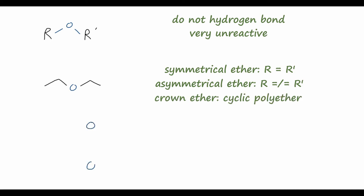Another type of ether is called a crown ether. An example has a six-oxygen cyclic molecule where each oxygen has two ethyl groups attached, forming a crown-like structure. Crown ethers are very useful because they can solvate metal ions very effectively — all of the lone pairs on the oxygens point inward toward the middle of the crown ether, making it easy to solvate a metal ion there. For example, this particular crown ether solvates potassium ions very well.